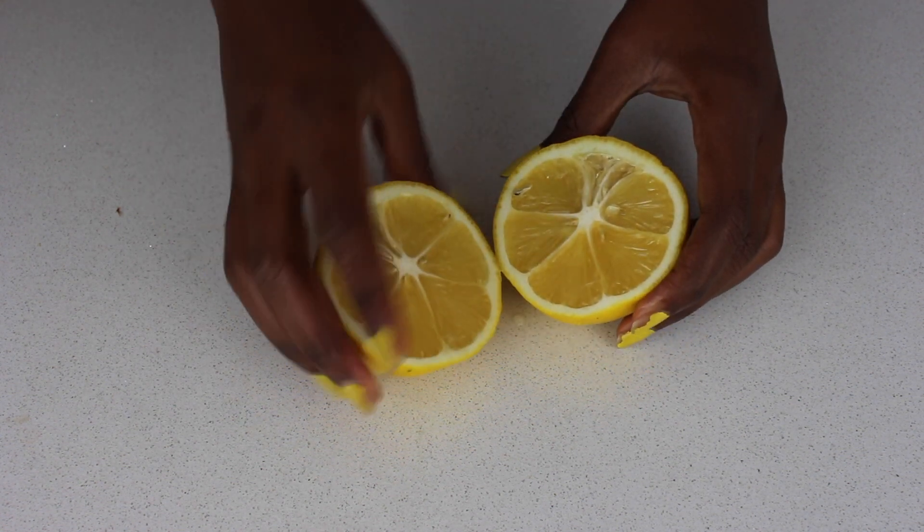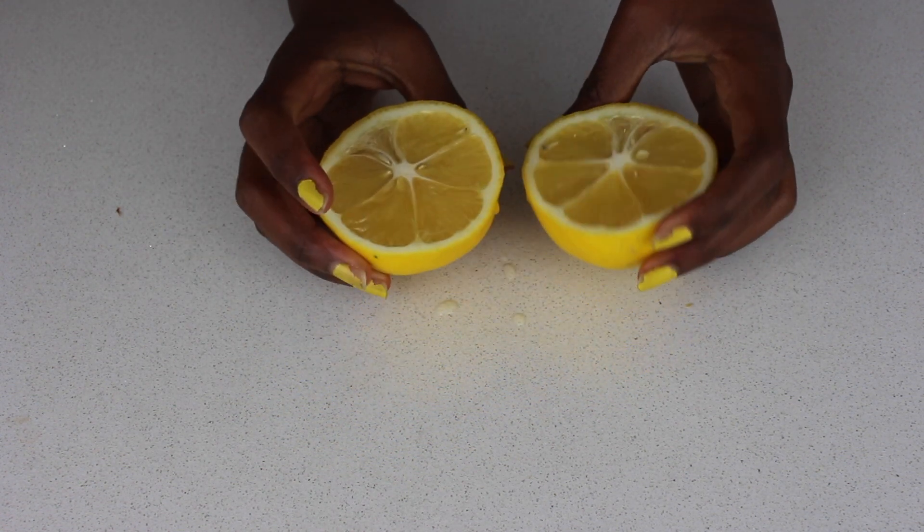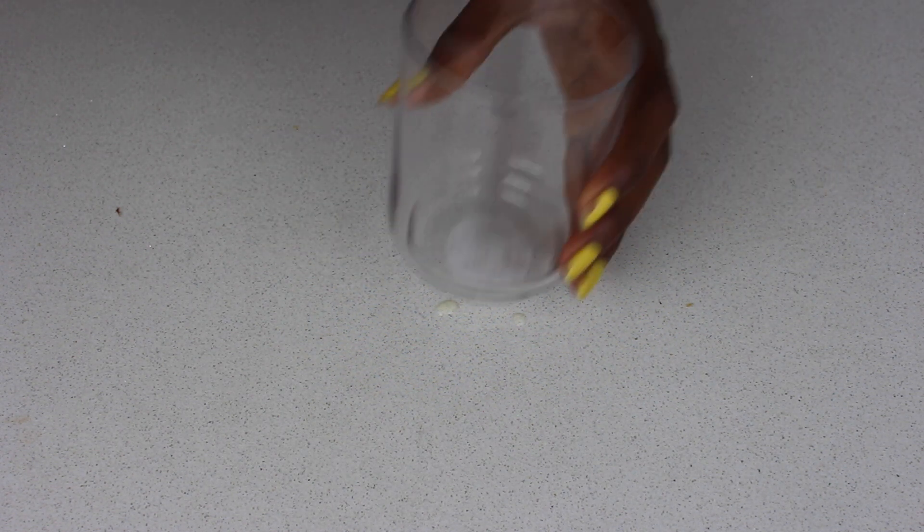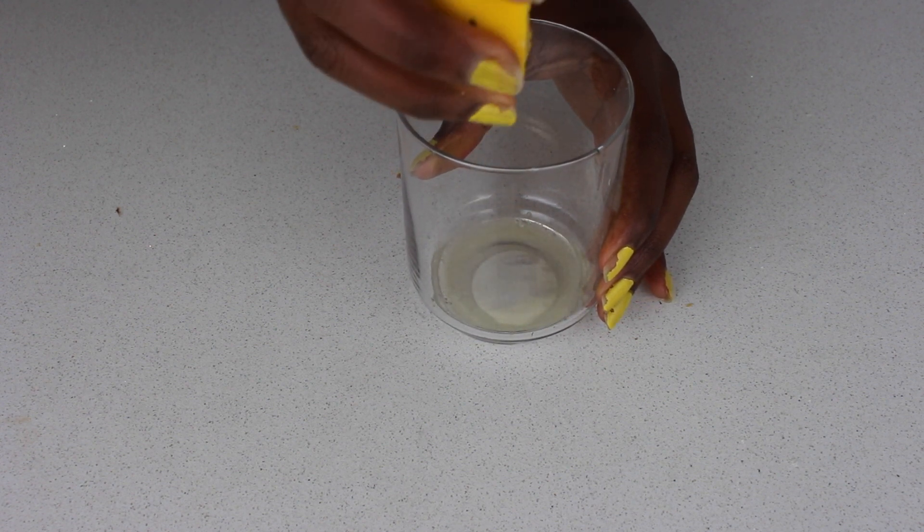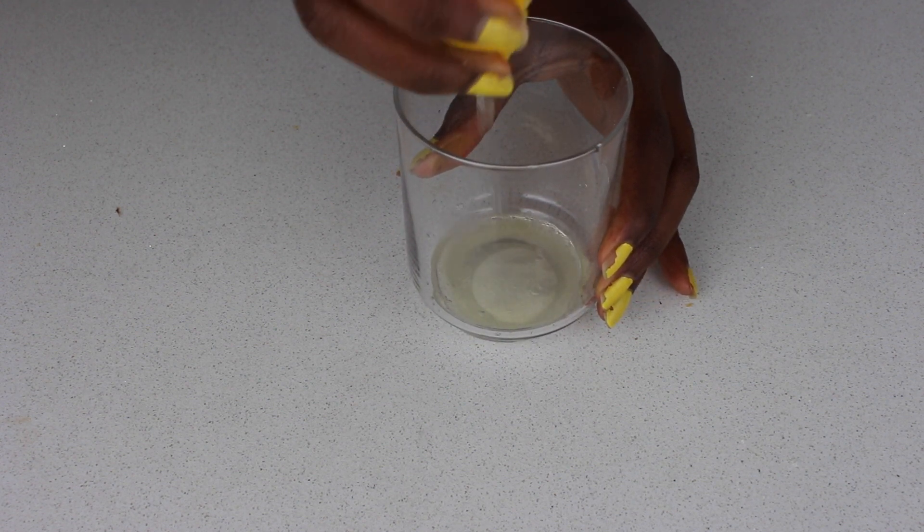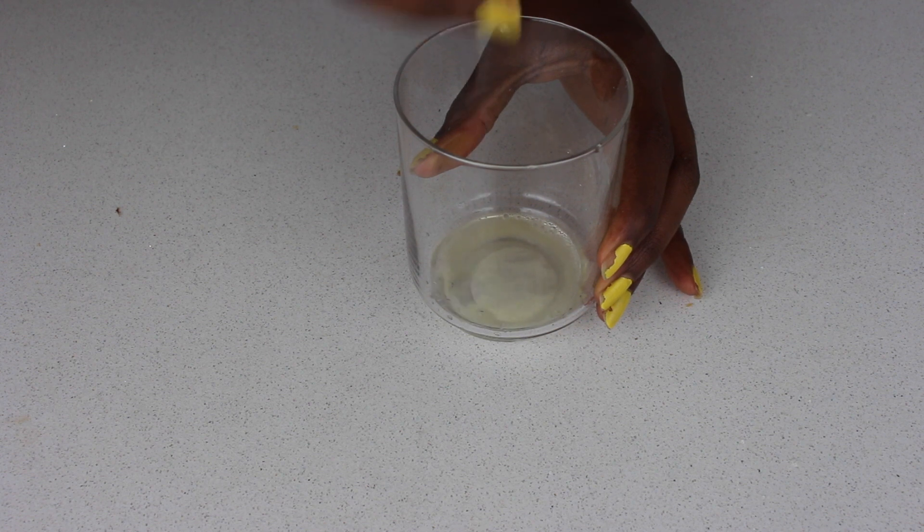And then to that, I'm going to add a teaspoon of honey. For some reason, I lost the footage for this, but I added a tiny bit of warm water to make it easy for me to mix it together, because as you know, in the cold weather, honey is very thick and it's very hard to mix it in with cold things.